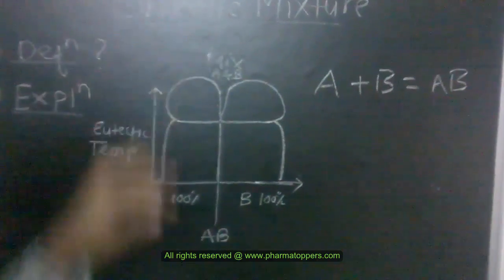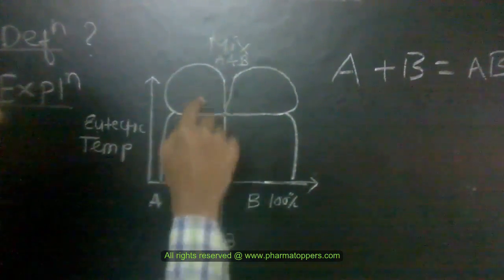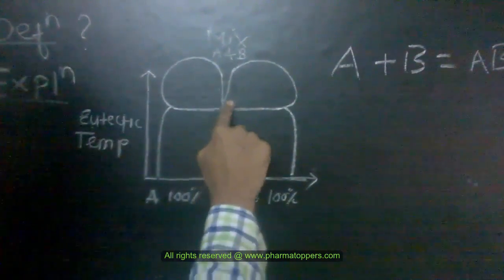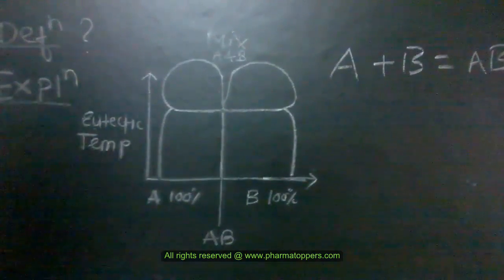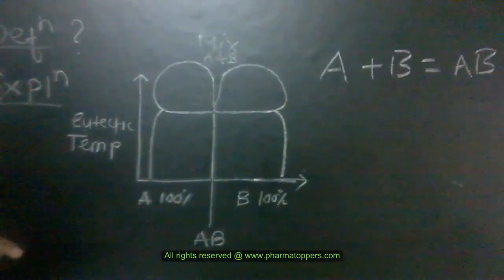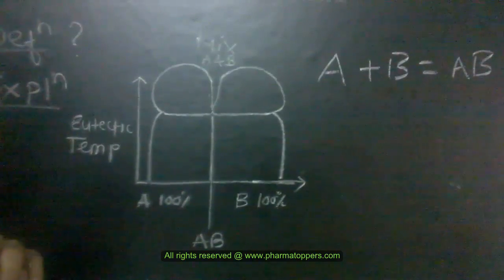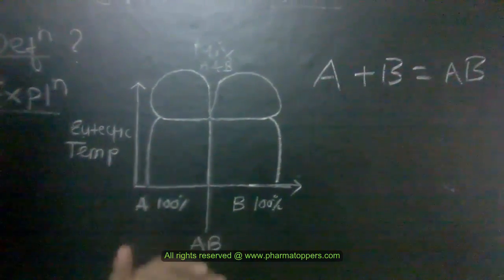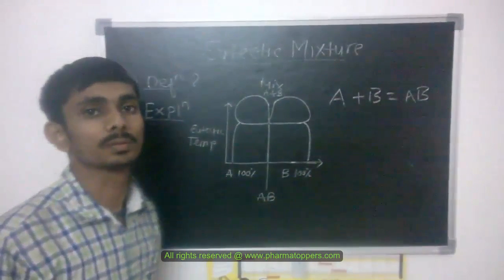But the mixture of A and B shows a slightly lower melting point. It is here, it should be slightly lower. Because of this, both individual components have higher melting points than the mixture of components.